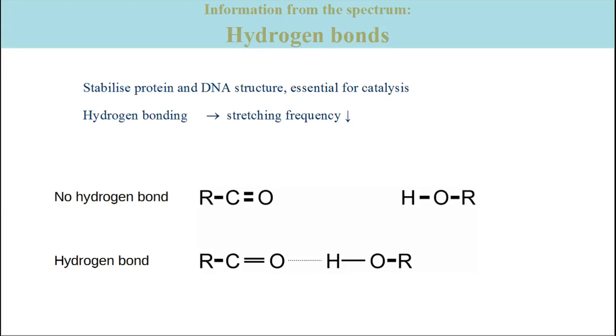The next influence on the vibrational spectrum is hydrogen bonding. Hydrogen bonds stabilize the structures of proteins and DNA and are essential for catalysis. Vibrational spectroscopy is one of the few methods that directly report on the strength of hydrogen bonds. Hydrogen bonding lowers the frequency of stretching vibrations as I will explain in the following.